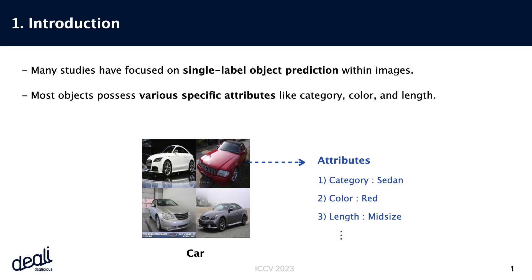In computer vision, much research has focused on predicting a single label for objects in images. However, in reality, objects are often more complex, possessing attributes such as categories, colors, and sizes.